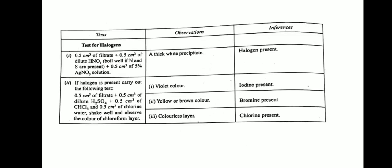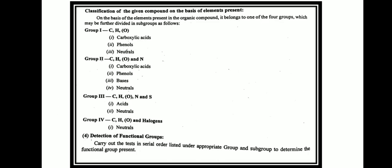For the test for halogens, take 0.5 ml of filtrate, add 0.5 ml dilute HNO3 and 0.5 ml of 5% AgNO3. If a thick white precipitate appears, halogens are present. To determine which halogen is present, take 0.5 ml filtrate plus 0.5 ml dilute H2SO4 plus 0.5 ml chloroform (CHCl3) and 0.5 ml chlorine water. Shake well and observe the color of the chloroform layer: violet color means iodine is present, yellow or brown means bromine is present, and a colorless layer means chlorine is present.